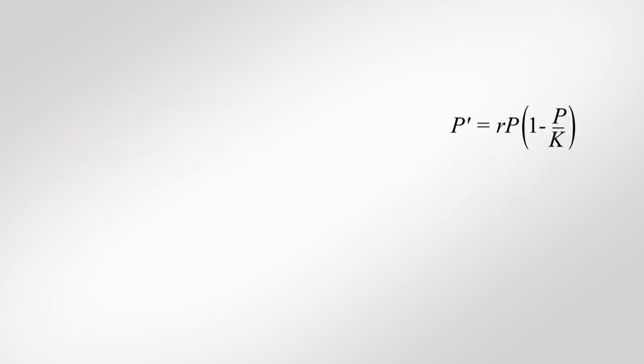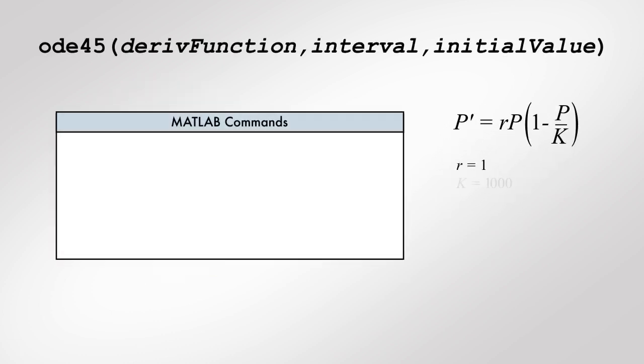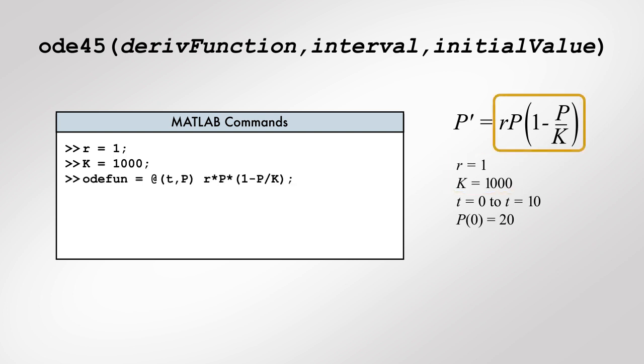We begin by creating variables for each of the three input arguments. The first variable is the function handle for the derivative of P. To simplify the function definition, we define variables for R and K, then define the function handle using these variables.